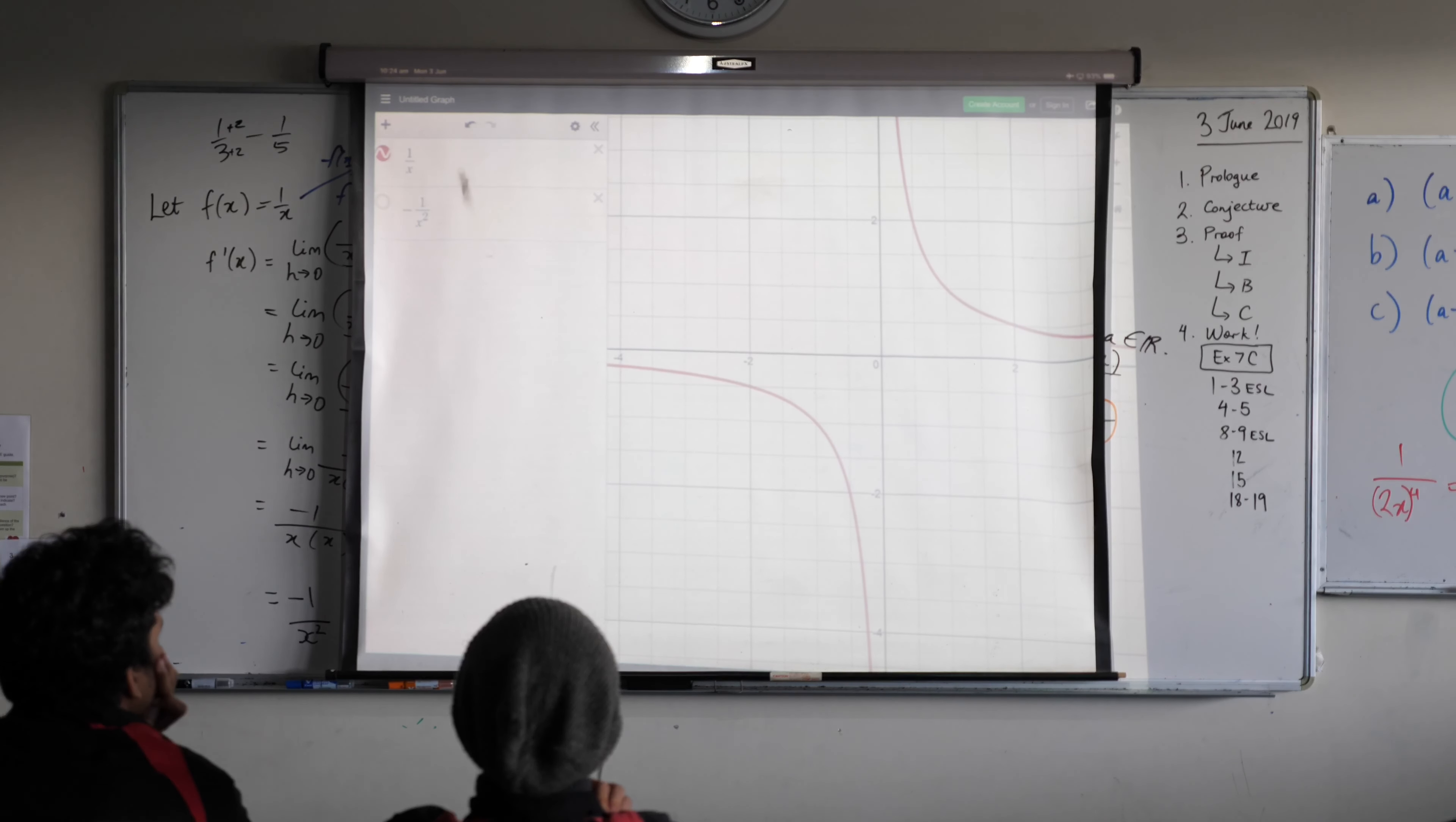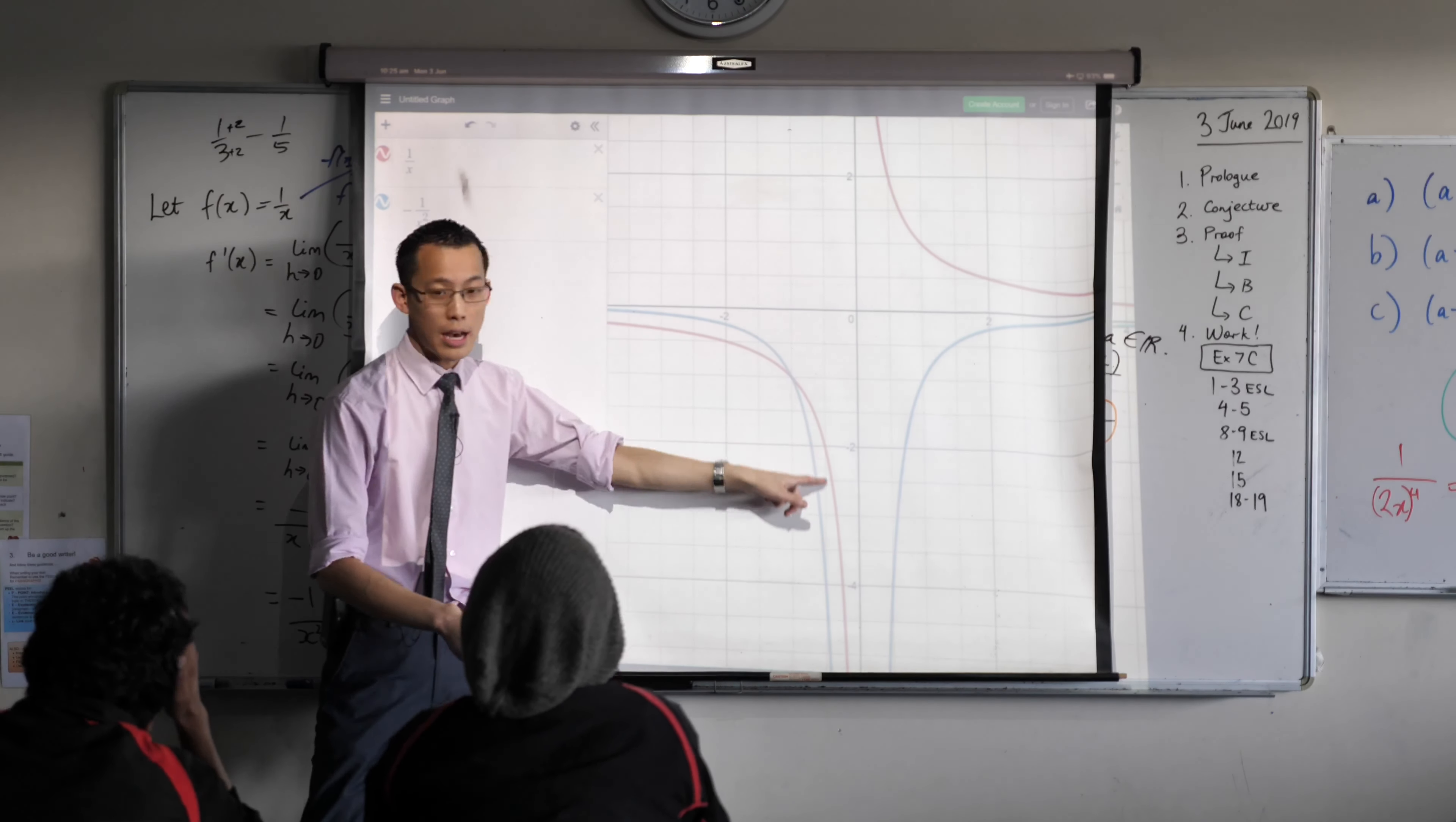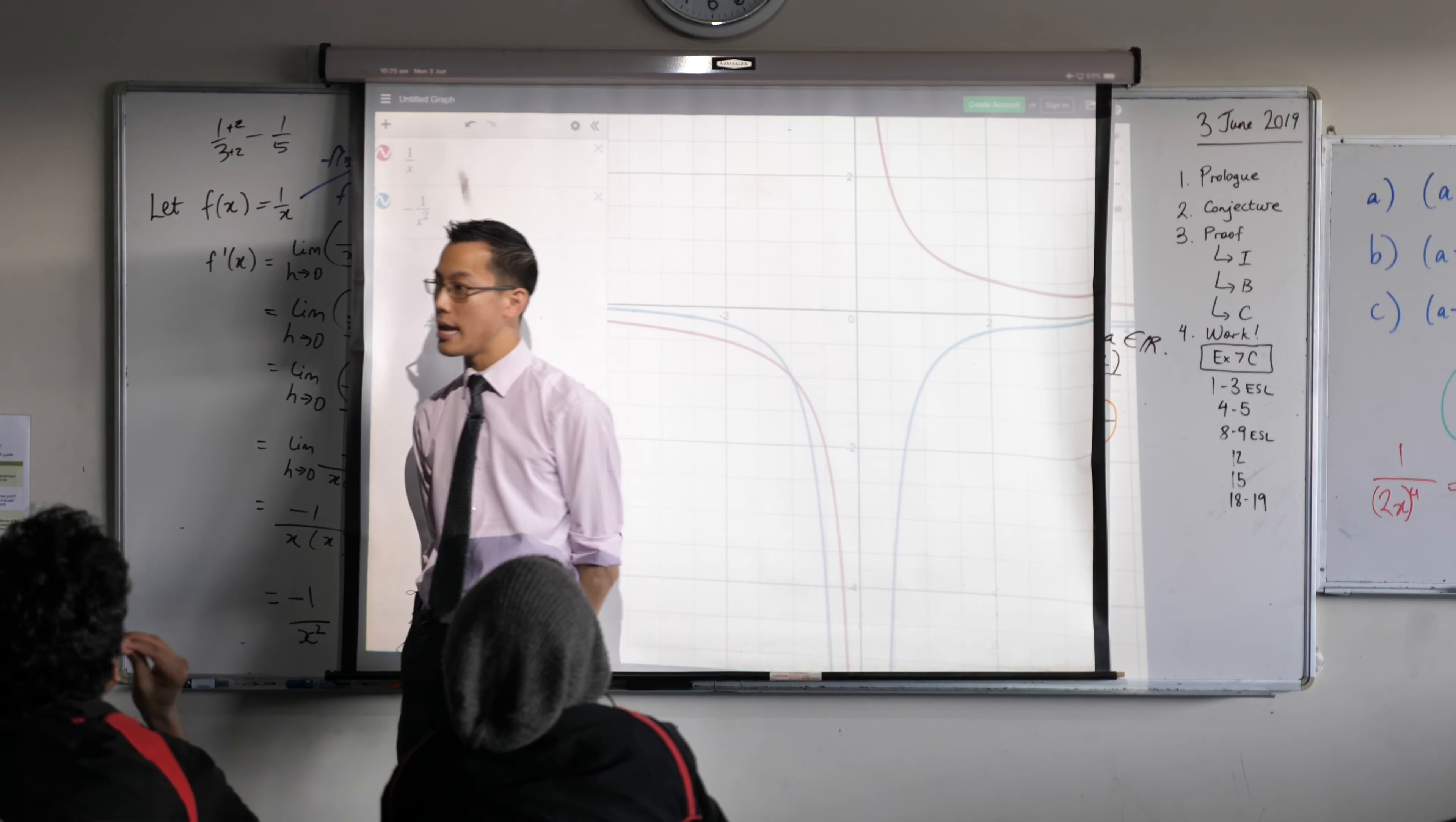Okay, now we just determined that the derivative, the gradient function, apparently is what? Minus one over x squared. Let's have a look at that guy. There he is right there. Think about this with me. Here's the blue line, it's the gradient function of the red line. The first thing I notice is the blue line's always negative.